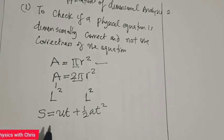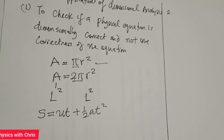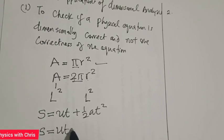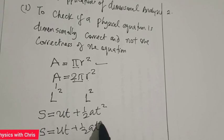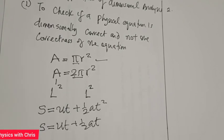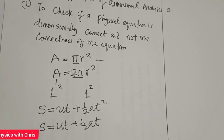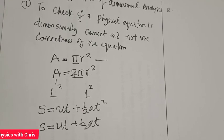Consider the equation s = ut + ½at². You might ask yourself: is this equation dimensionally correct? Suppose you can't remember whether it is ut + ½at² or ut + ½at. How do you cross-check and confirm? The rule of dimensional analysis is that if we are adding two quantities, the two quantities must have the same dimensions for them to be added.